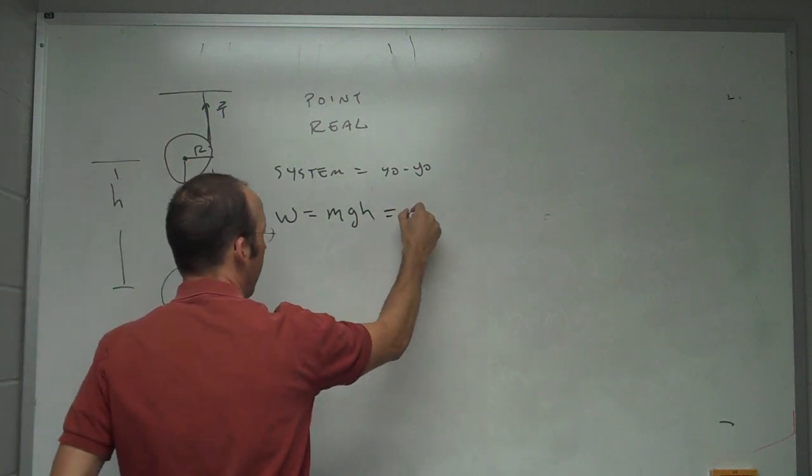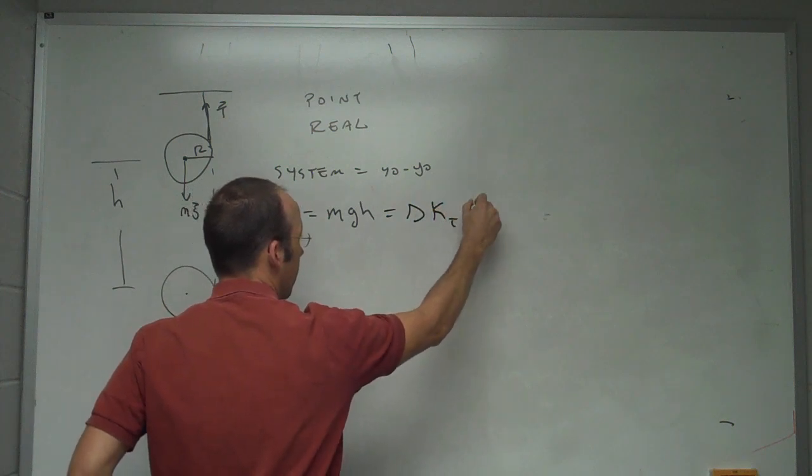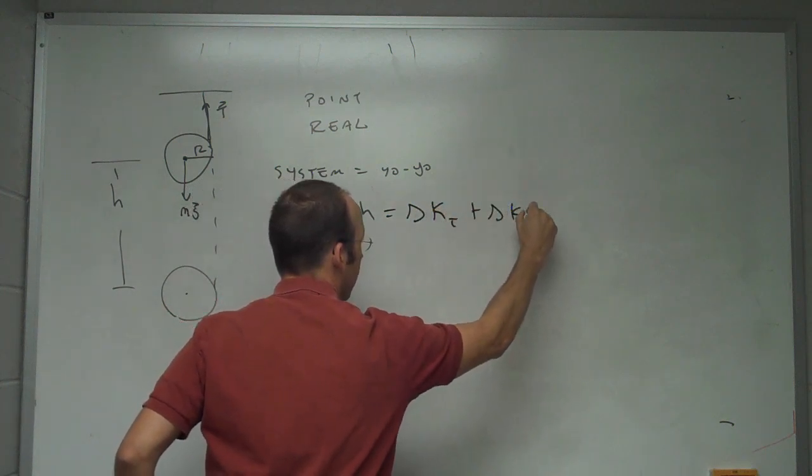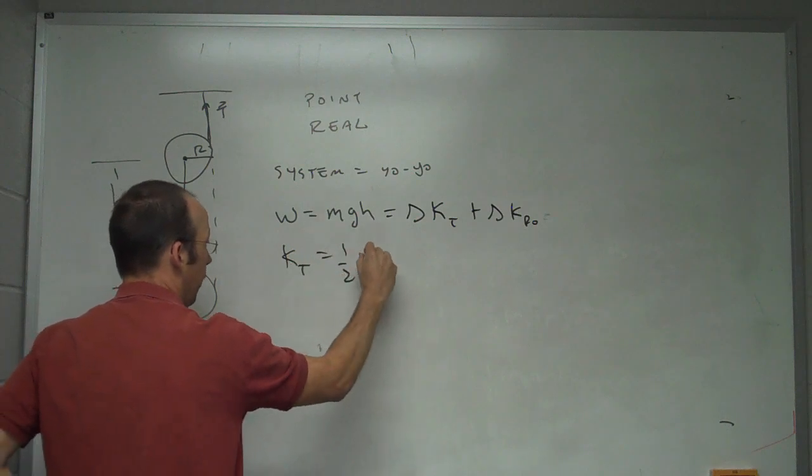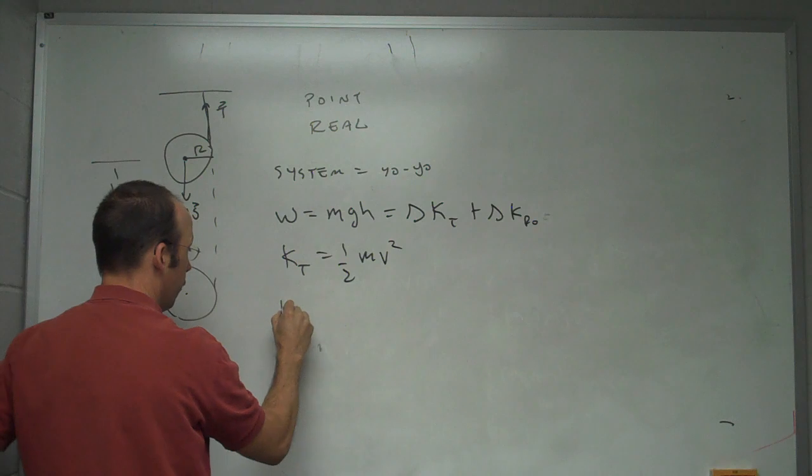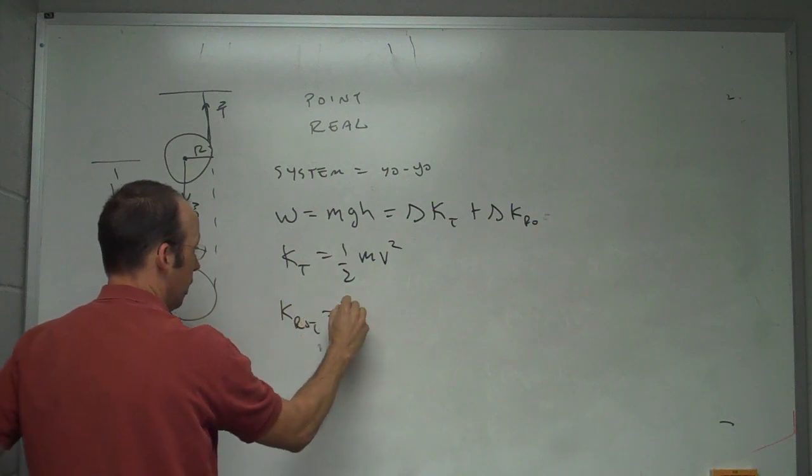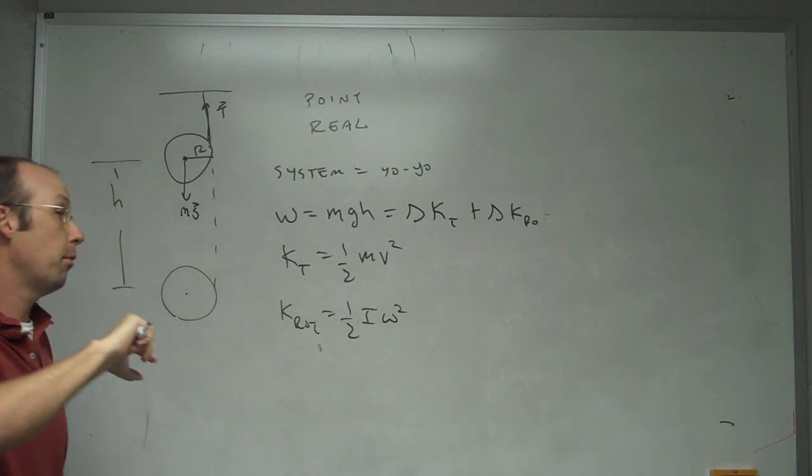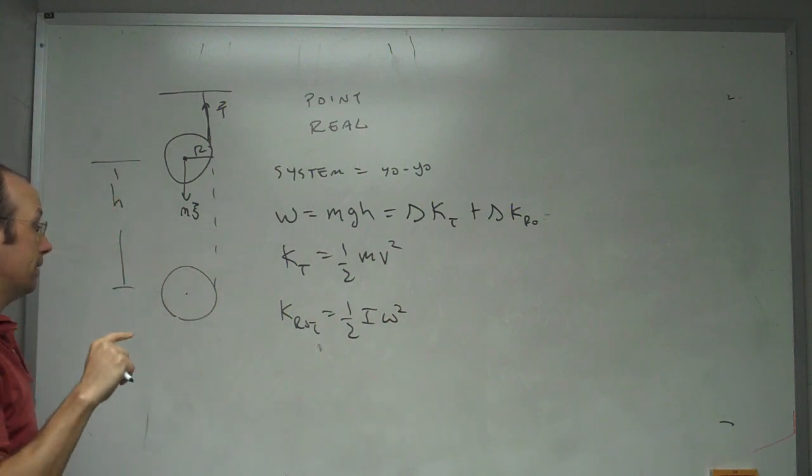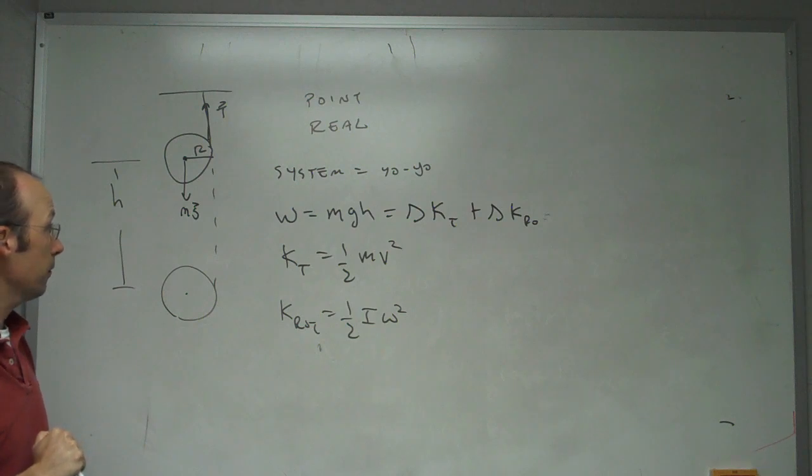Now what kind of energy can I have? I can have translational kinetic, and I can have rotational kinetic energy, where kinetic translational is one-half m v center mass squared, and rotational is one-half I omega squared, where I is the moment of inertia, omega is the angular velocity about the center of mass.